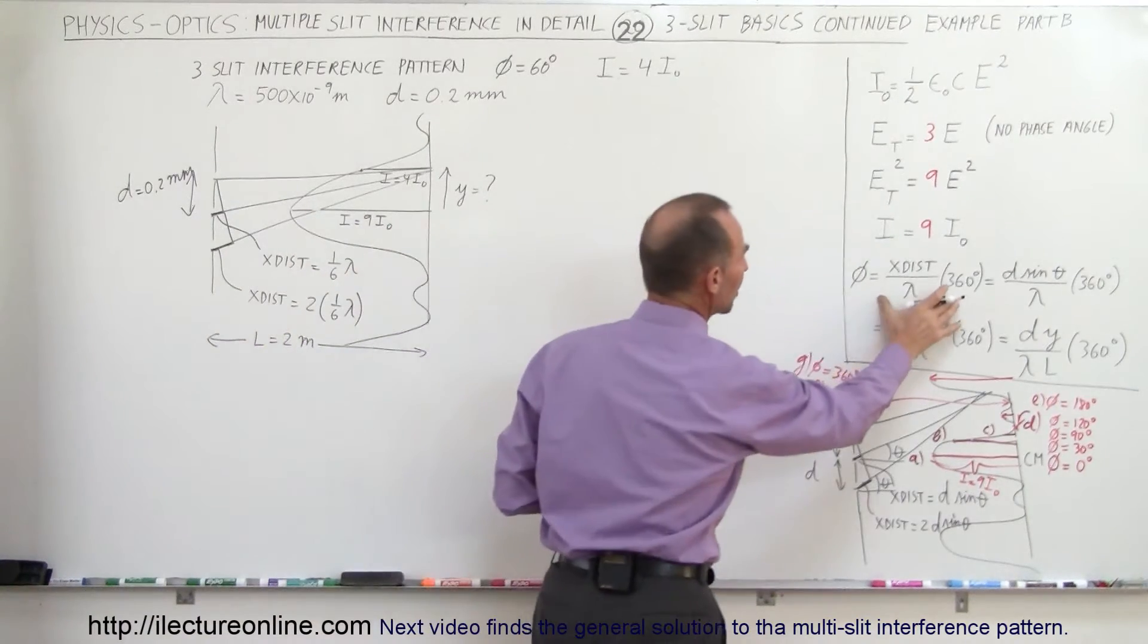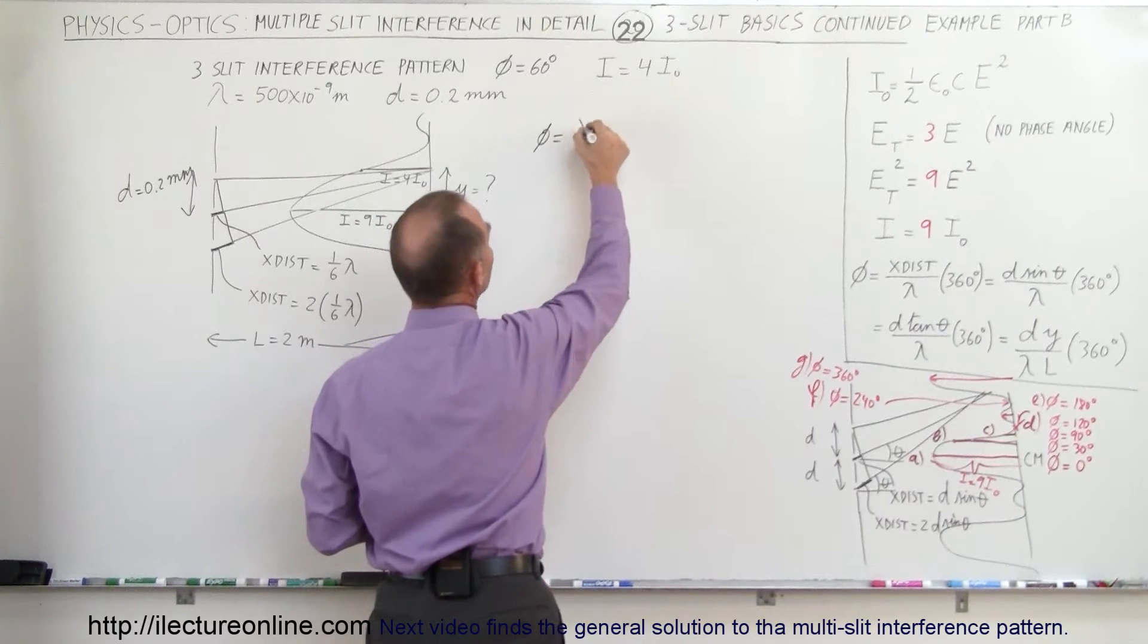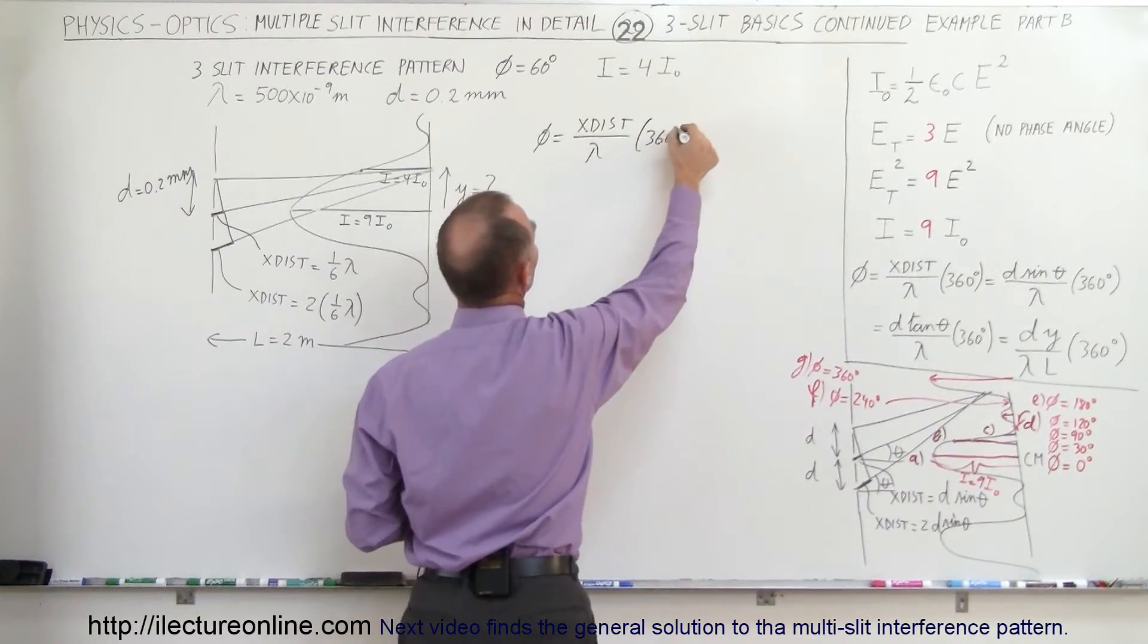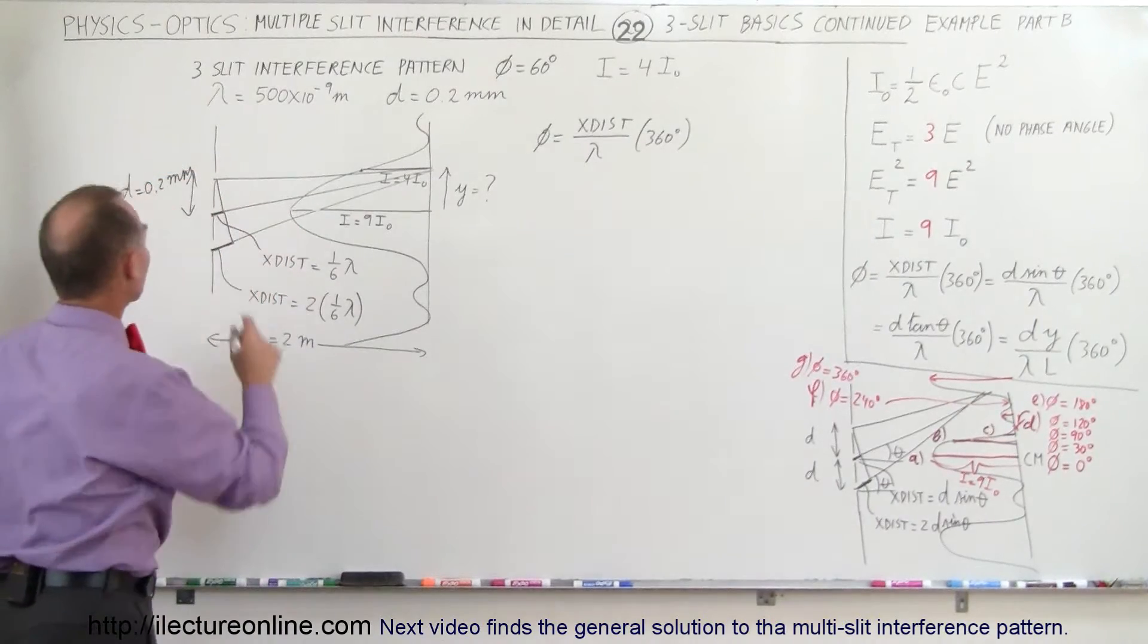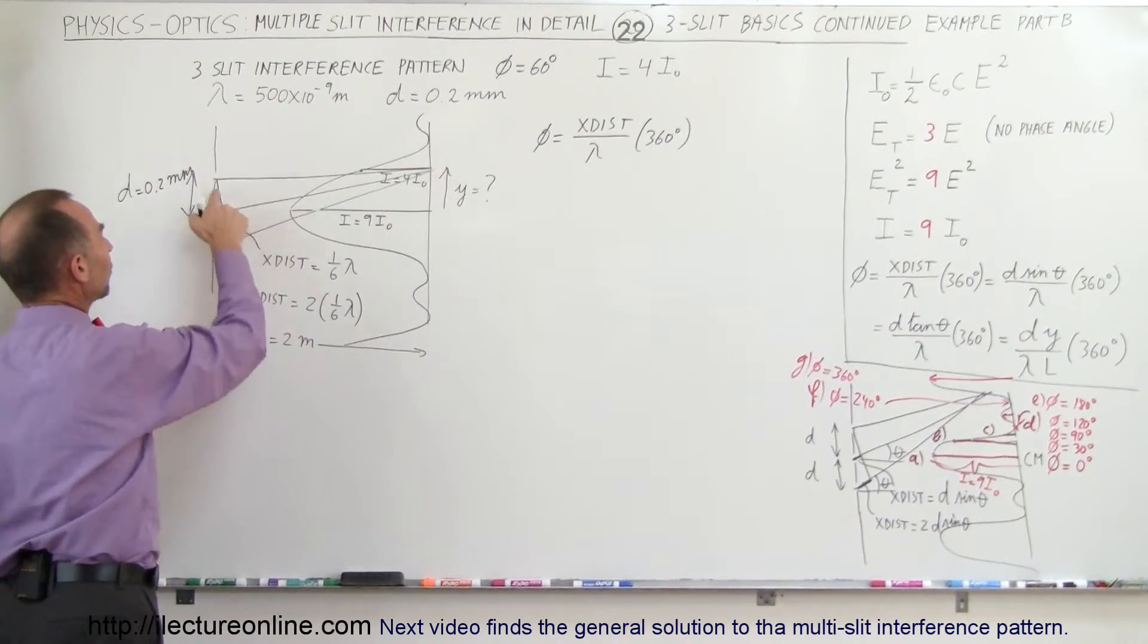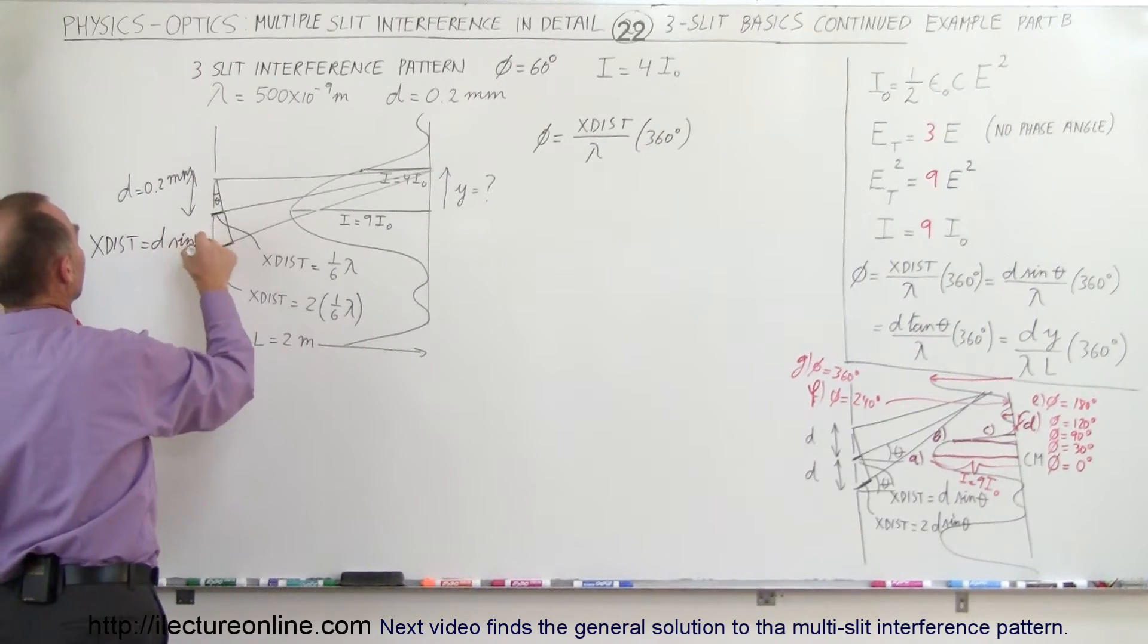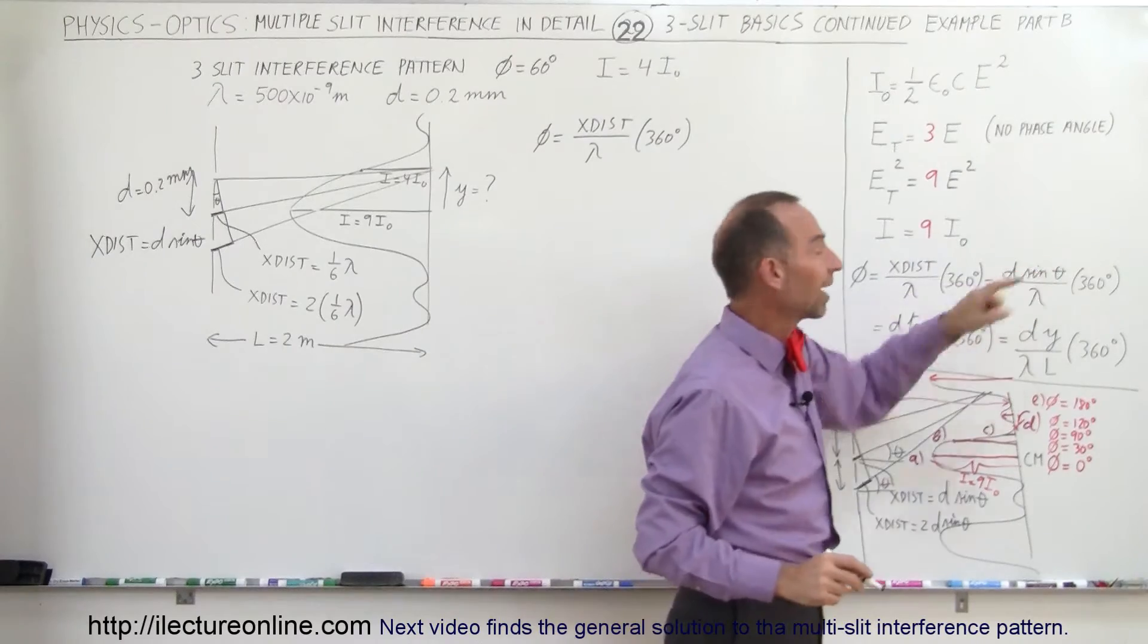We go back to the definition here that the phase difference is equal to the extra distance traveled divided by lambda times 360 degrees. Now the extra distance right here, if this is d and that angle here is theta, we can see that's opposite to the angle, so we can say that the extra distance can also be expressed in terms of d sine theta. And we can see that right here, that extra distance can be expressed as d sine theta.